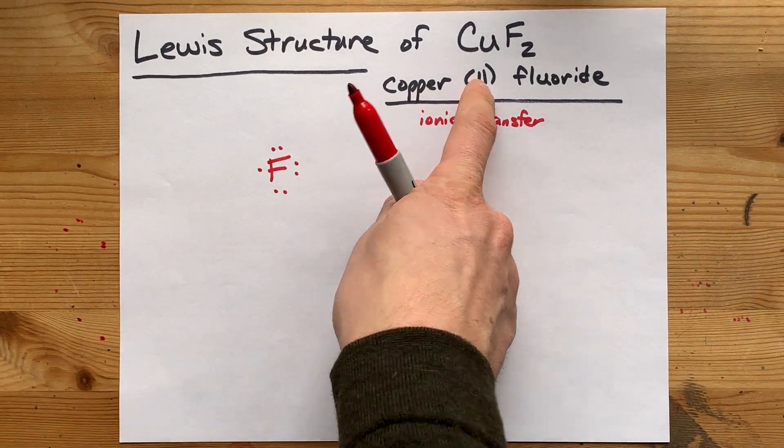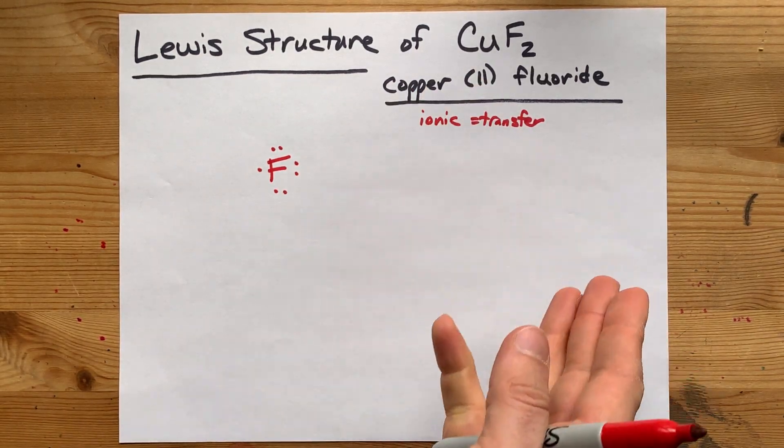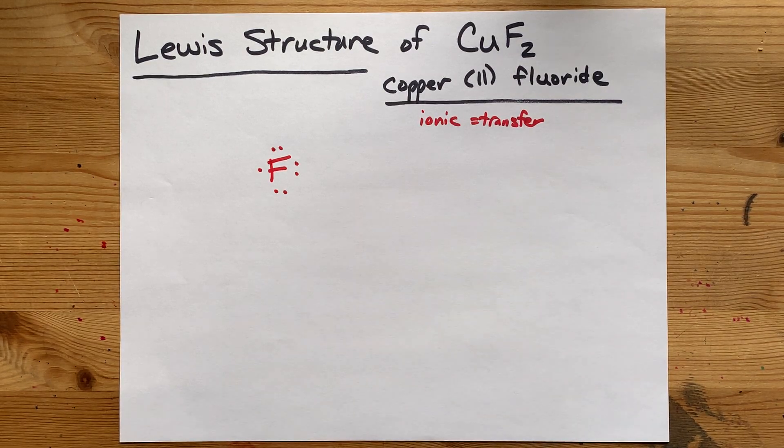Copper 2 has a charge of 2. Surprise, surprise. So it's going to bring two valence electrons with it.